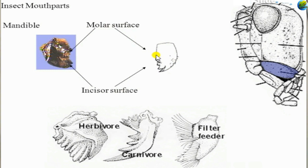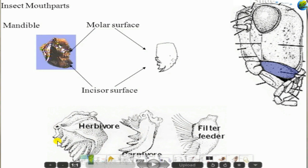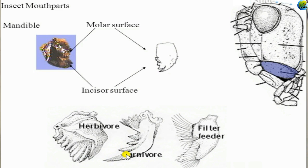We can also see variations in mandibles based on feeding habits. In herbivores, the mandible has more incisor surfaces. In carnivores, the terminal incisor area is prominent for cutting prey, and the grinding area is also highly developed. In insects that suck plant sap, the mandibles are not as strongly sclerotized since they do not need to cut solid food.